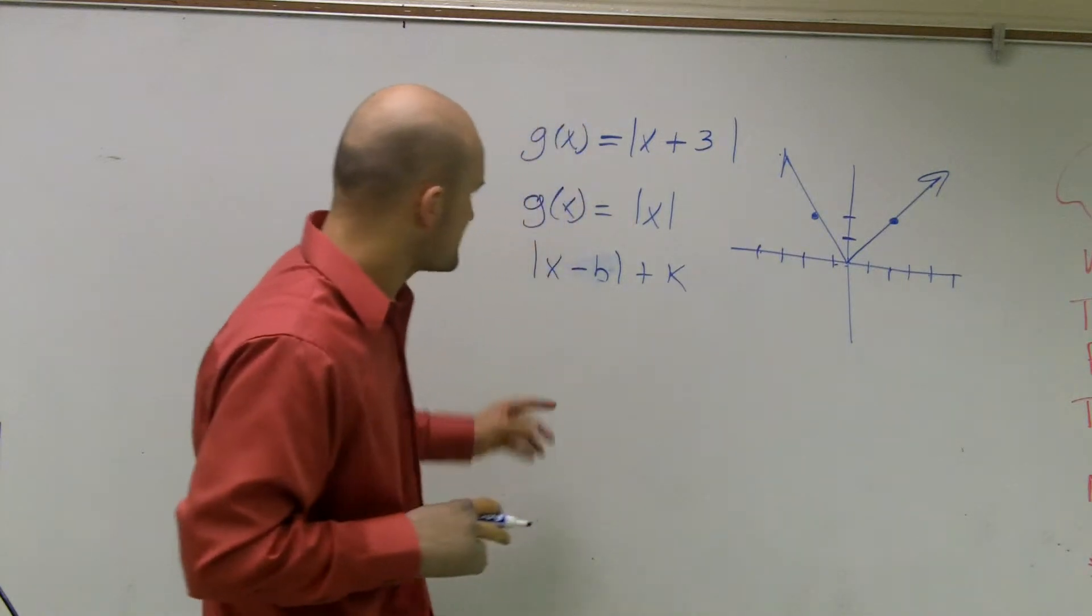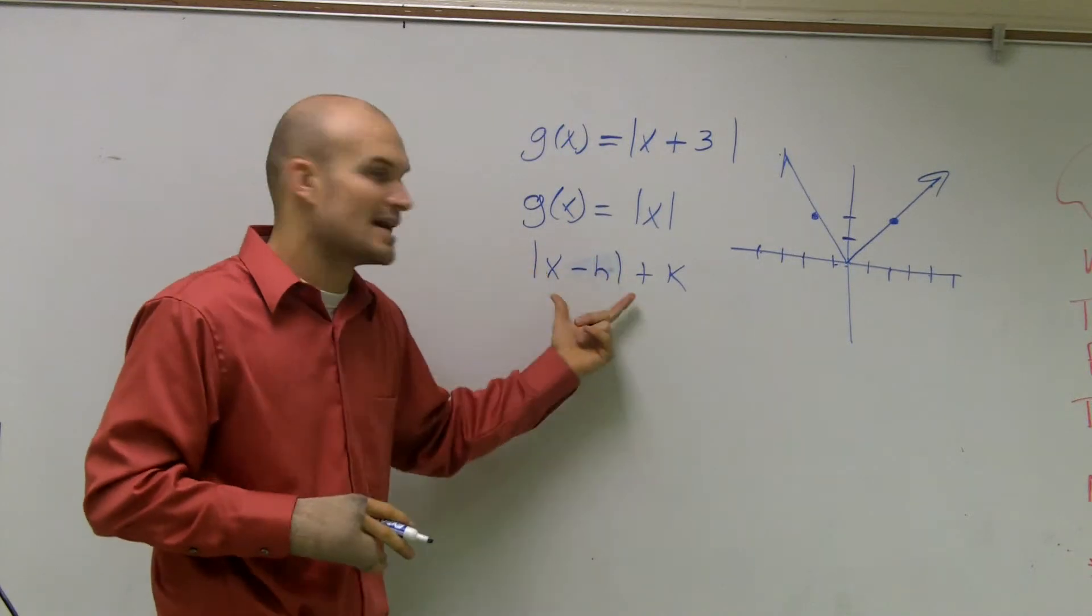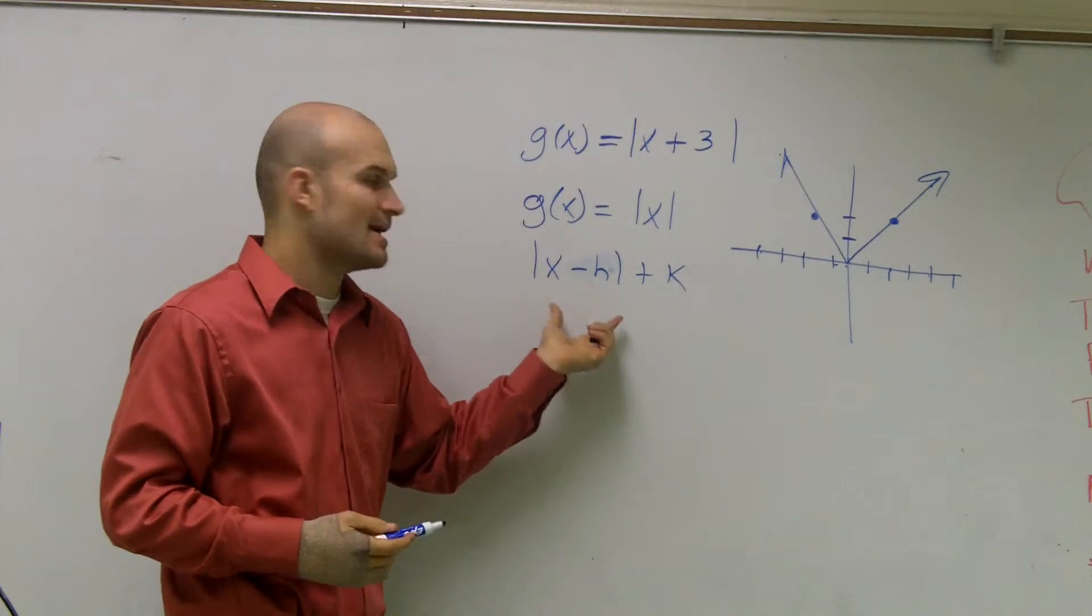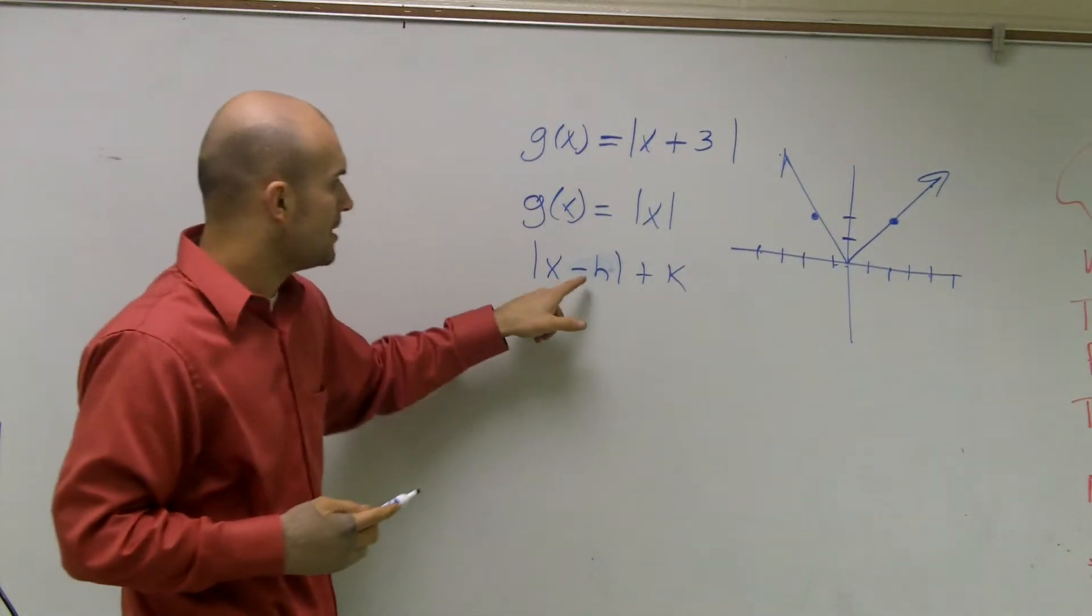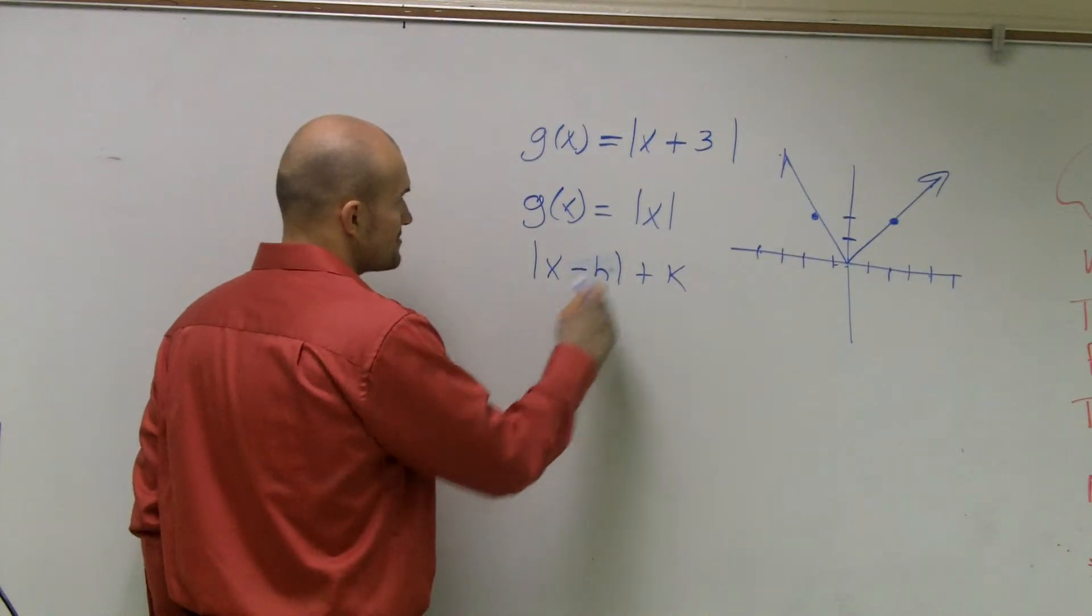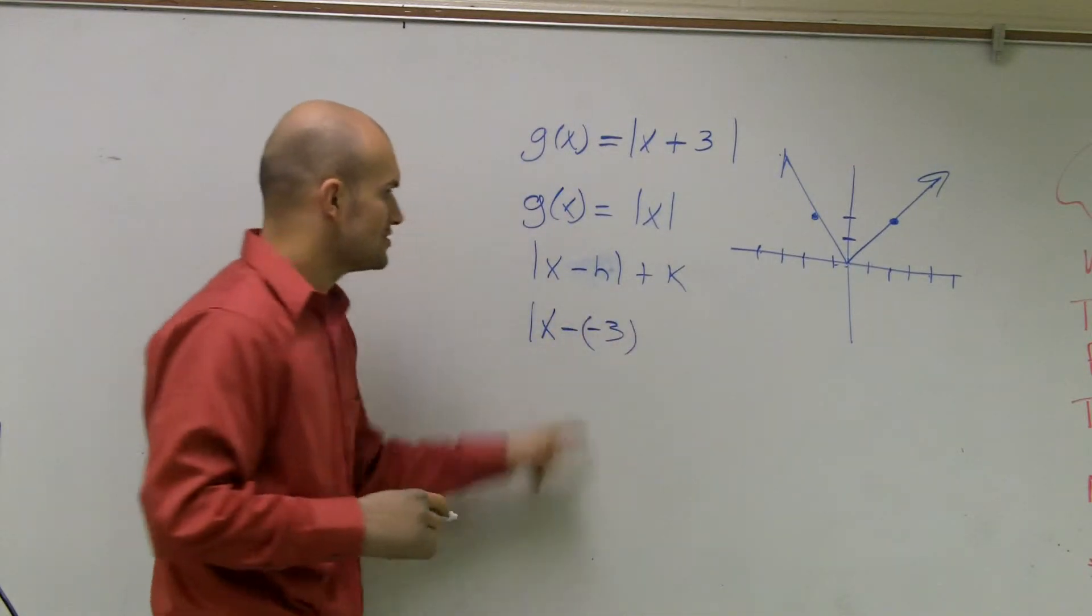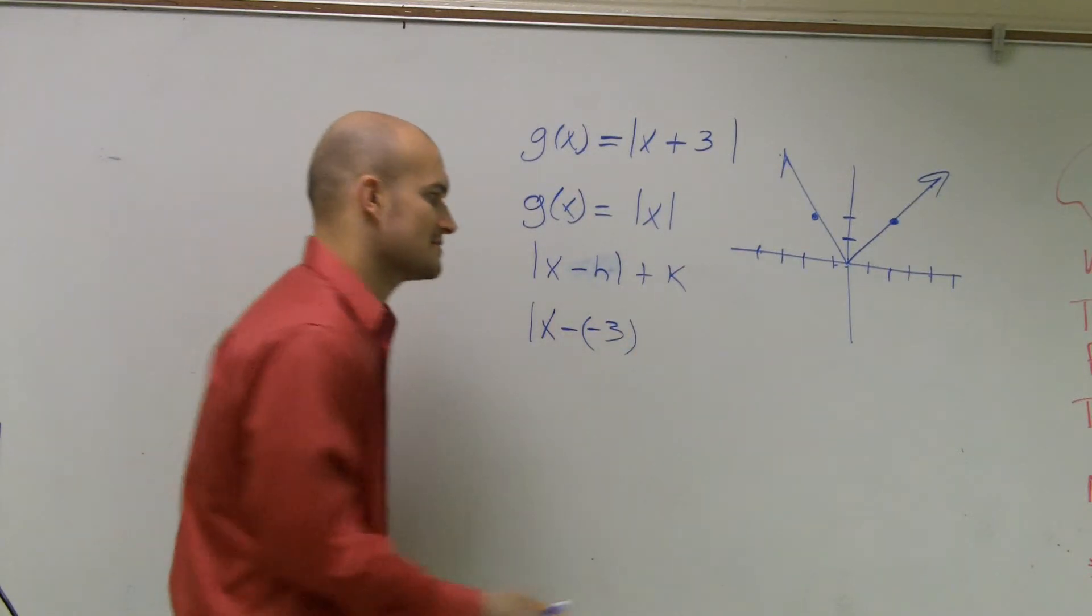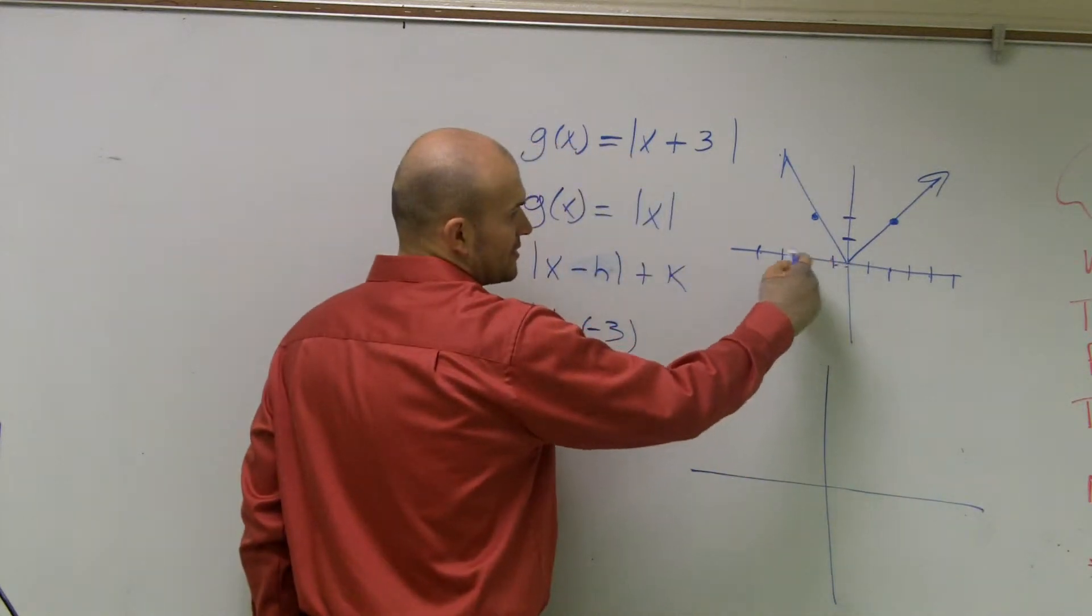Whenever I add or subtract anything inside of my function, see here's my function absolute value of x, whenever I add or subtract anything to my x, that's going to be shifting my graph left or right. And since it's a negative value, it's going to do the opposite. So if I say x plus 3, that's really the same thing as x minus a negative 3, which is going to tell me to shift my graph 3 units to the left.